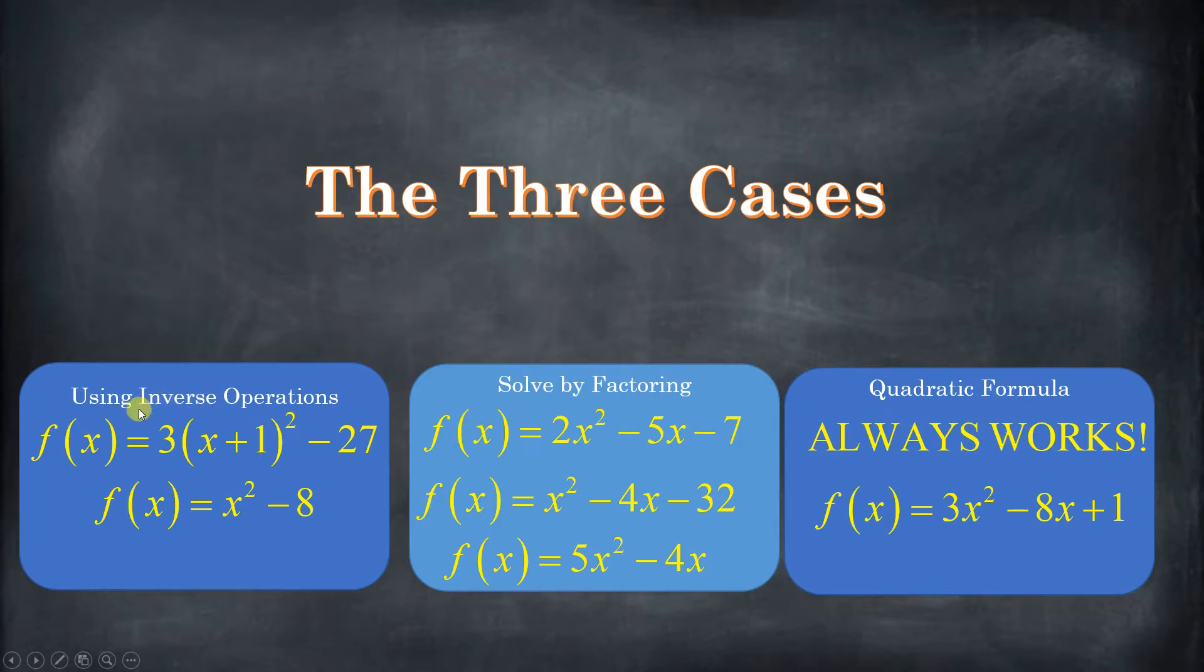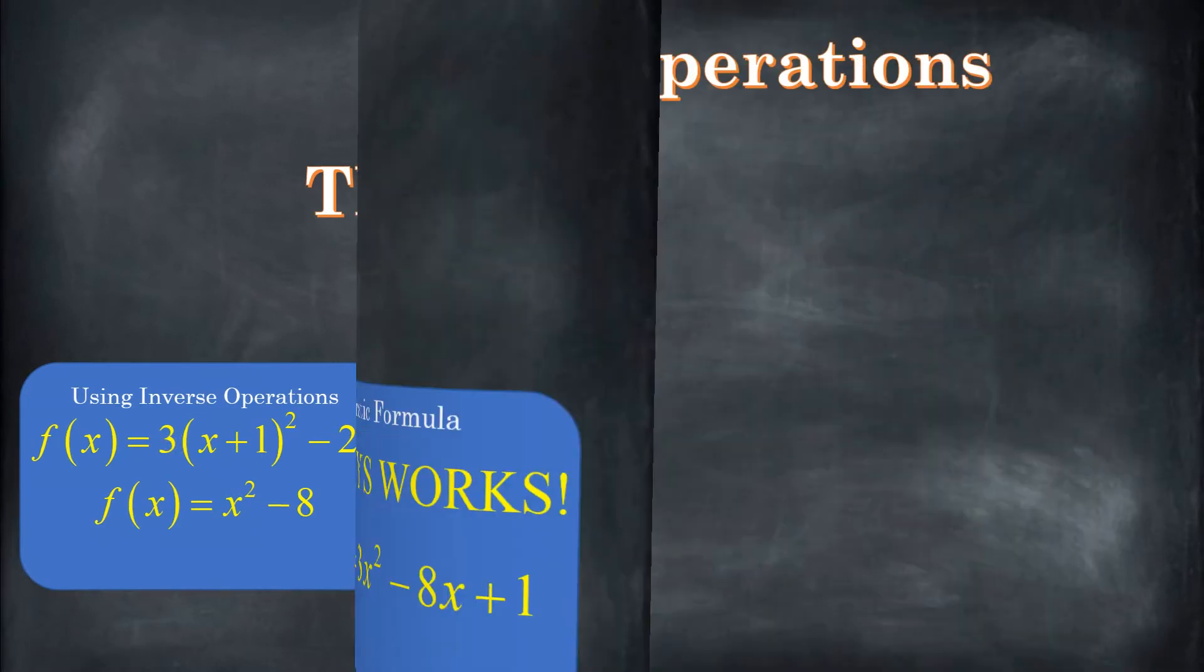It's the easiest one to mess up. But these two are easier. The quadratic formula is by far the trickiest one. So let's talk about, in this video, let's talk about how we can use inverse operations to solve a quadratic equation to find its x-intercepts, and when we can do it.